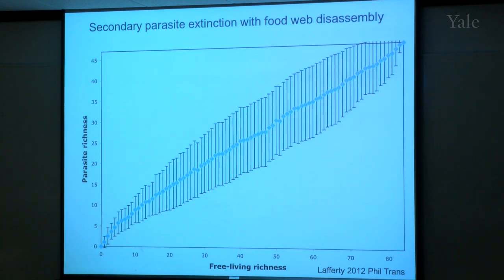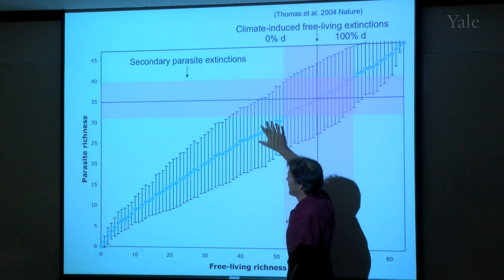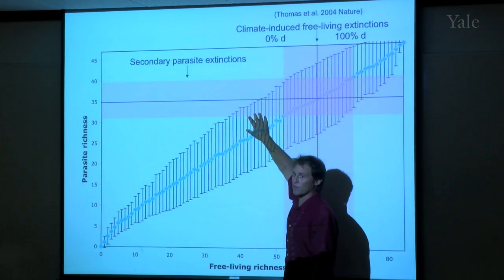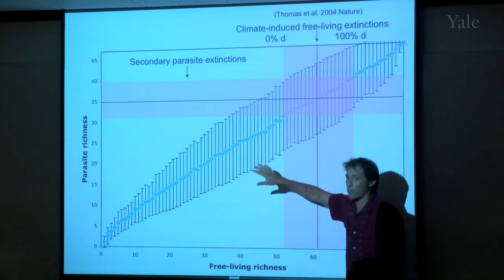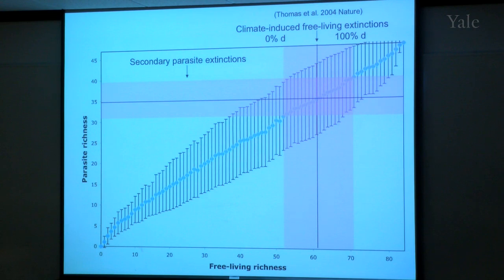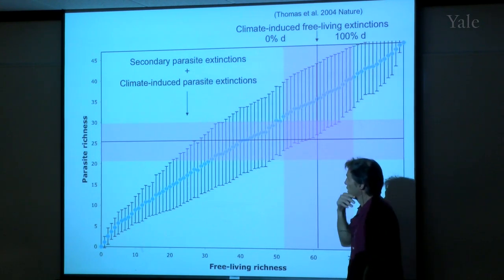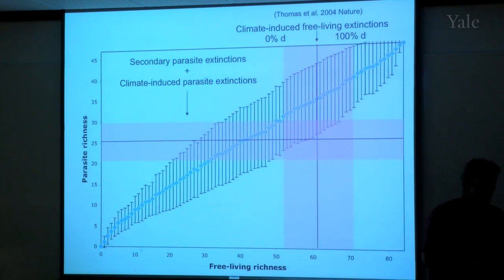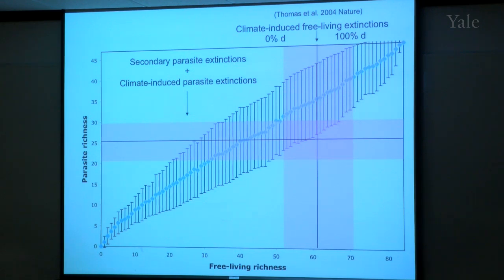With the expected 15 to 37 percent reduction in biodiversity, we might expect subsequent secondary parasite extinctions. But it's also important to remember that parasites are not only dependent on their hosts — they have their own thermal physiology, their own niches, and free-living stages that interact with the environment. So it's quite feasible that parasites could suffer primary extinctions in addition to secondary extinctions, meaning parasite richness might actually decline faster than free-living richness with climate change. This is exactly the opposite of what most people would expect — most of the literature says we're going to suffer more infectious diseases as a result.